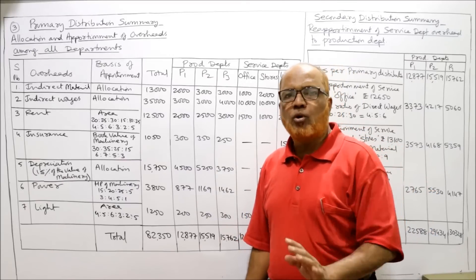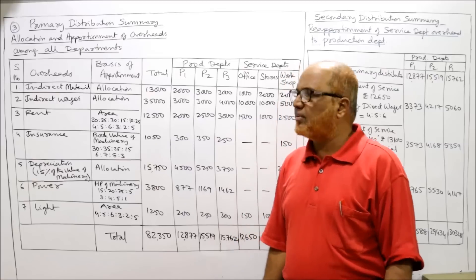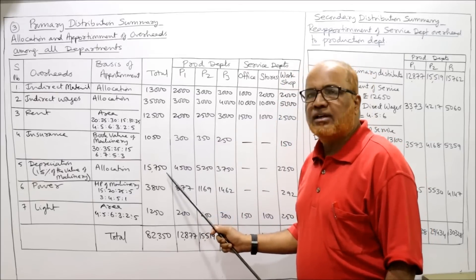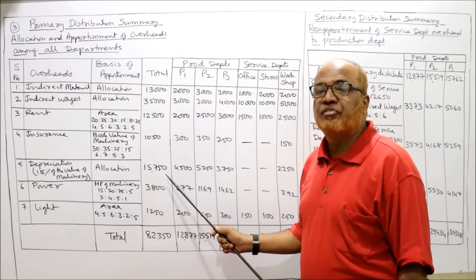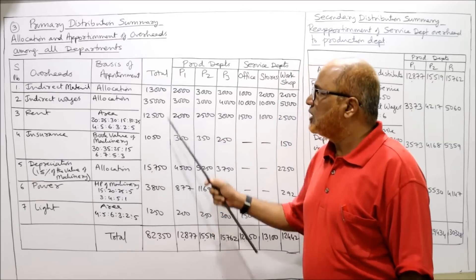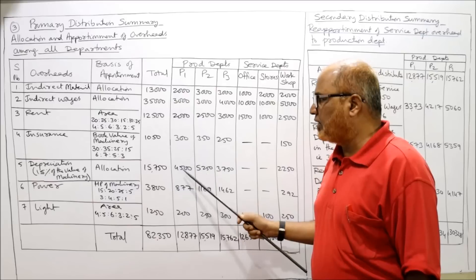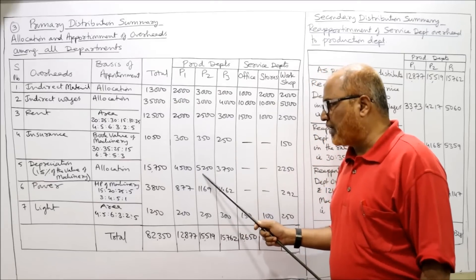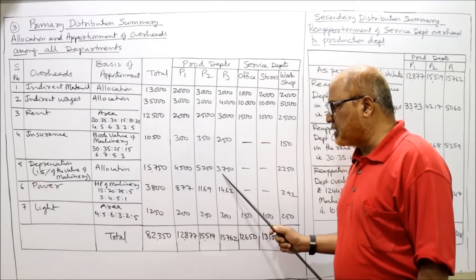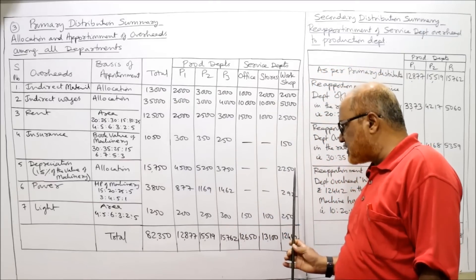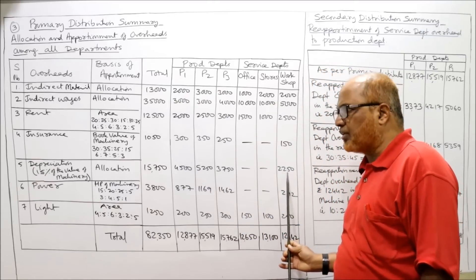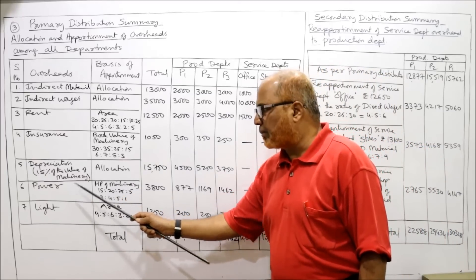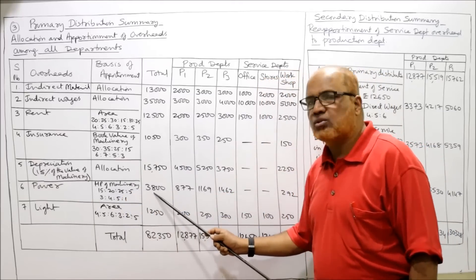Depreciation is 15% of the book value of machinery for each department. This gives: P1 = 4,500, P2 = 5,250, P3 = 3,750, and Workshop = 2,250.